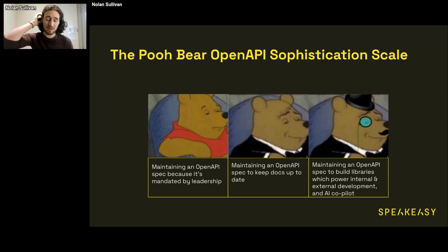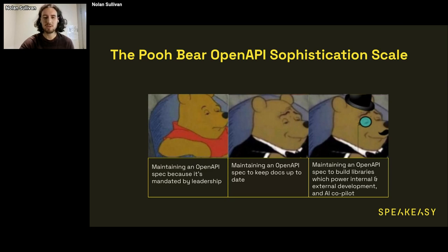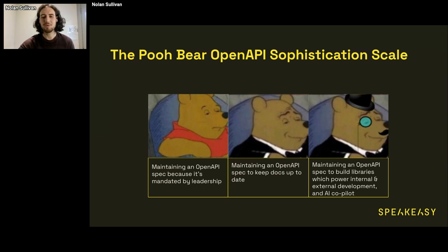This is something that I often send to clients — I call it the Poo Bear OpenAPI Sophistication Scale. At the very beginning, you have people who are maintaining an OpenAPI spec just because it's mandated by the leadership team. The next level is maintaining a spec to keep your docs up-to-date, which is probably where most organizations are today. And then the last level, where I think everyone should be trying to get to, is maintaining an OpenAPI spec that you can use to build libraries — which power internal and external API development and power AI code pilots.